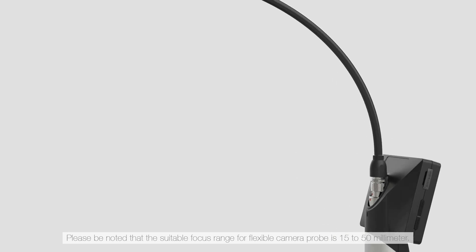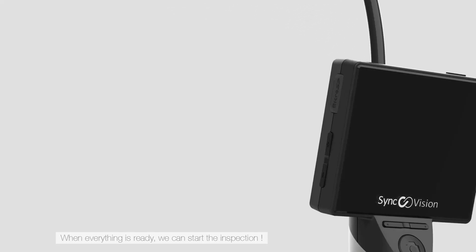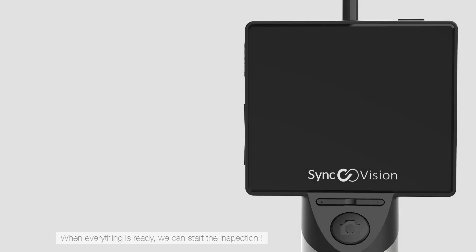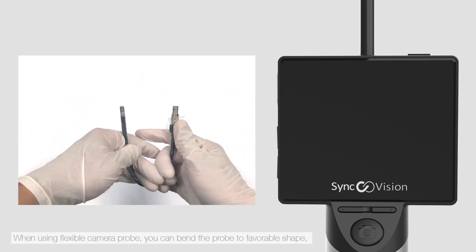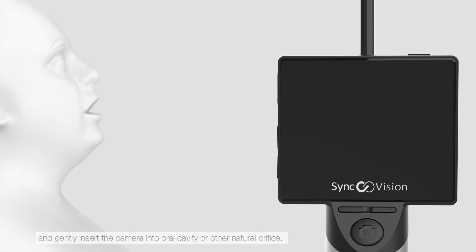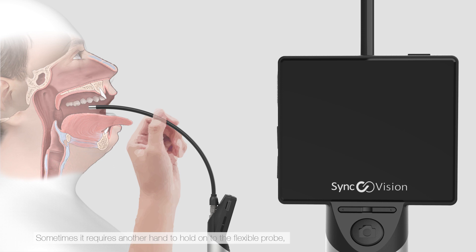Please be noted that the suitable focus range for flexible camera probe is 15 to 50 mm. When everything is ready, we can start the inspection. When using flexible camera probe, you can bend the probe to favorable shape and gently insert the camera into oral cavity or other natural orifice. Sometimes it requires another hand to hold onto the flexible probe to ensure steadier control and better aiming.